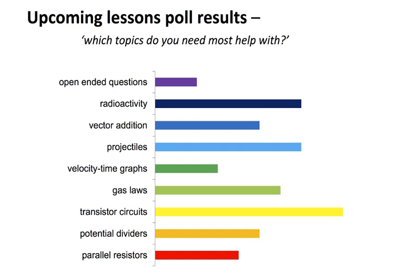As I said before, it's completely anonymous — the only information I get is which boxes have been ticked and any additional information you've typed in about the topics you want me to go over. From that graph, apart from transistor circuits, projectiles is up there as one of the topics people are finding tricky. So I certainly didn't want to leave this question undone.